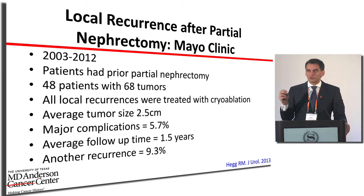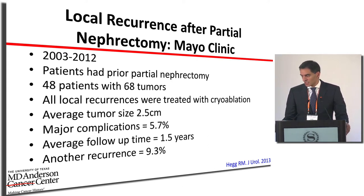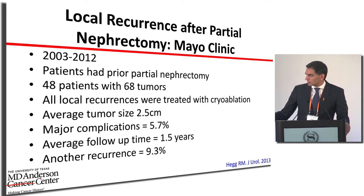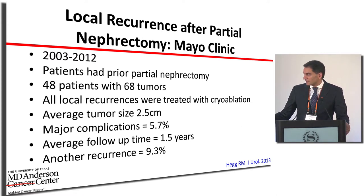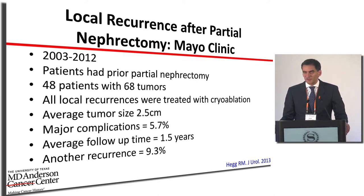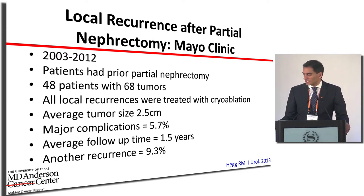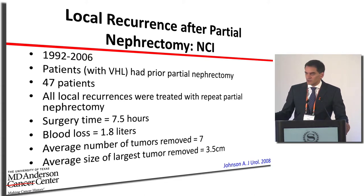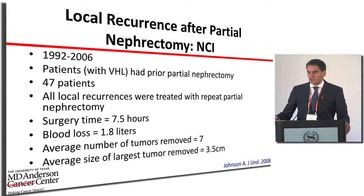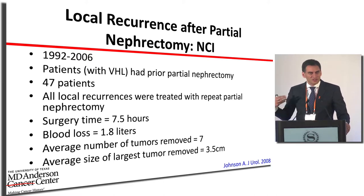Outcomes from the Mayo Clinic study: small tumor size, very low major complication rate, and an acceptable recurrence rate of about 9%. We can successfully rescue patients after failed partial nephrectomy with another procedure. The NCI group, dealing with VHL and other syndromes, had much more complicated and longer surgeries, with a major complication rate close to 20%, and about 20% of patients needing another procedure at five-year follow-up.